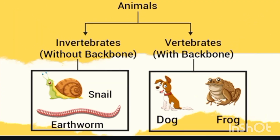Animals are divided into two major classes depending upon the backbone: invertebrates and vertebrates. Invertebrates are animals without a backbone — for example, snail and earthworm. Can you name more in the comment box below? Vertebrates are the animals which have a backbone, like dog, frog, and many more.